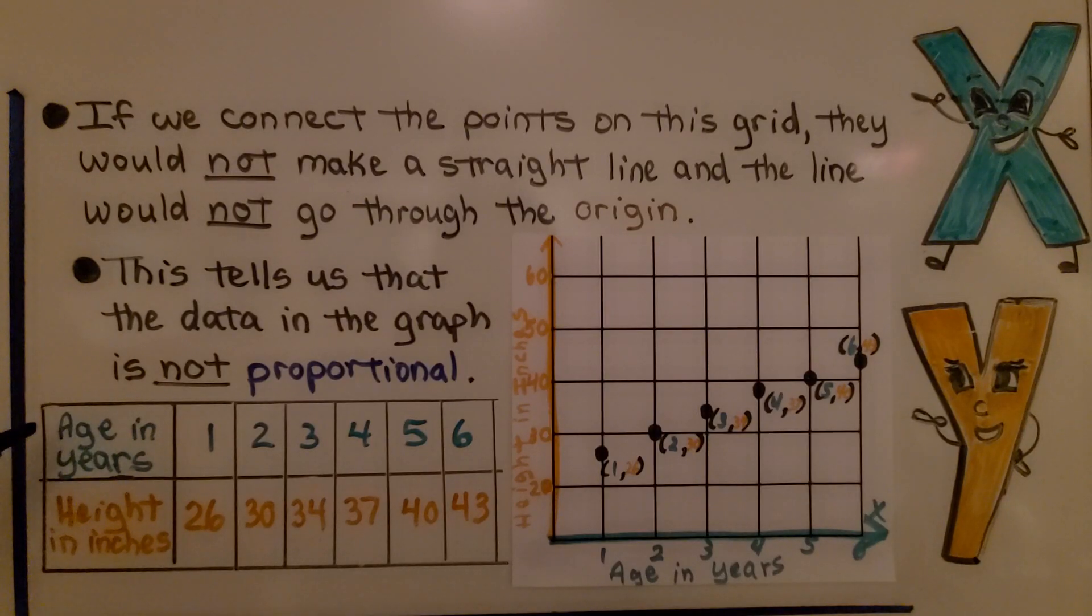This table shows a child's age in years and their height in inches. If we connect the points on this grid, they would not make a straight line, and the line would not go through the origin at (0,0). This tells us that the data in the graph is not proportional. At one year old, the child is 26 inches, and at two years old, 30 inches. It went up by four. At three years old, 34 inches. That went up by four. But at four years old, it only went up by three. Then it went up by three again the next year and up by three. So it's not a constant rate of change. We went four inches, four inches, then three inches, three inches. That wasn't constant. It changed from four to three. So this is not proportional.